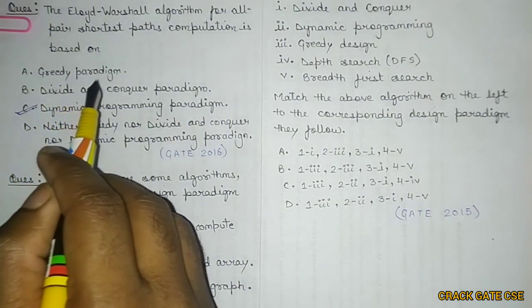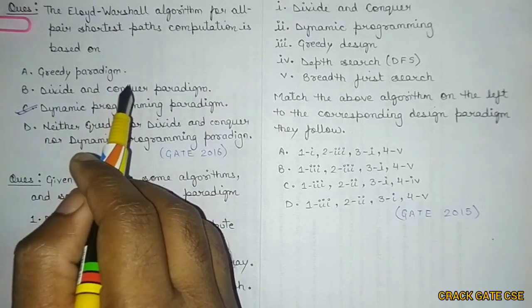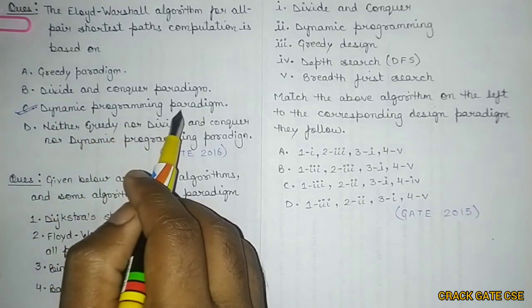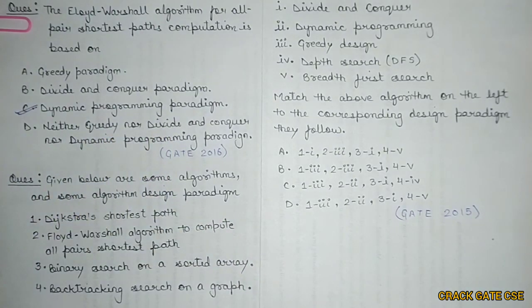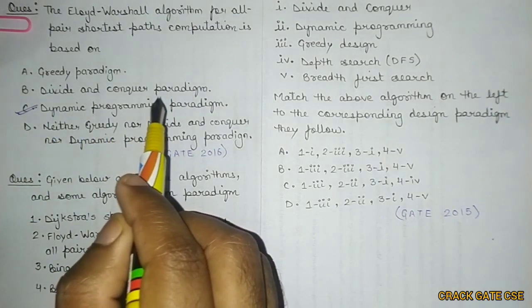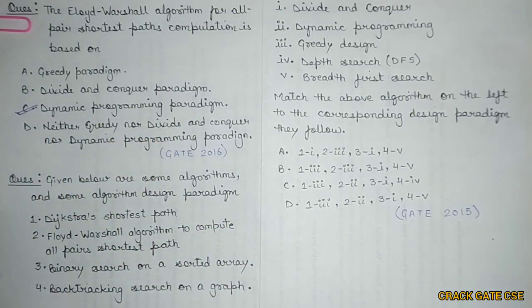Because in greedy, we do not explore all possibilities. In divide and conquer, we divide the problem into subproblems, then combine the solution. In dynamic programming paradigm, we try to explore all possibilities of a problem. This is what we were doing in matrix form: trying to find the path using each and every vertex. That's why it is a dynamic programming paradigm.